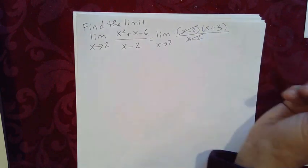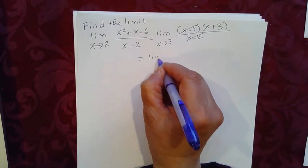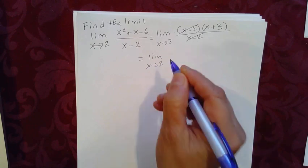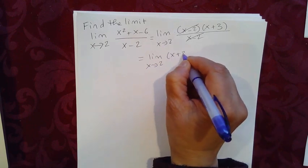And now the x minus 2 and the x minus 2 cancels out, and what we get is the limit as x approaches 2, x plus 3.